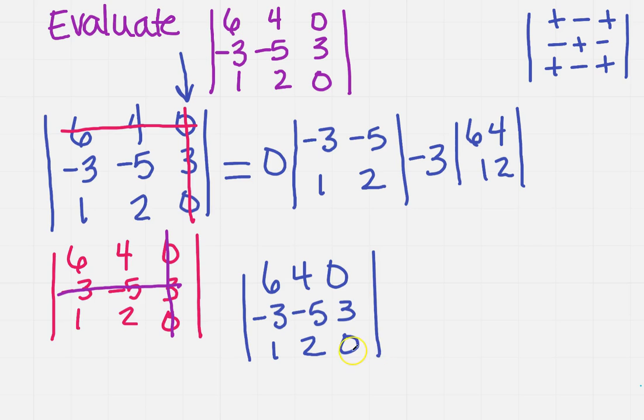So this time I'm going to be the last place, which is a zero, so it's going to be +0. And now I'm going to knock out that row and the column in which it's in, which is going to give me 6, 4, -3, -5.